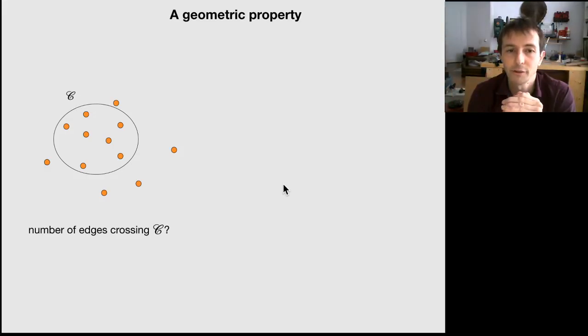What is the minimum number of edges that need to cross this boundary in any feasible solution, in any valid convex partition? Can we say something about that? If we can answer this question, I believe it is useful to improve the resolution of the problem and to improve our models.